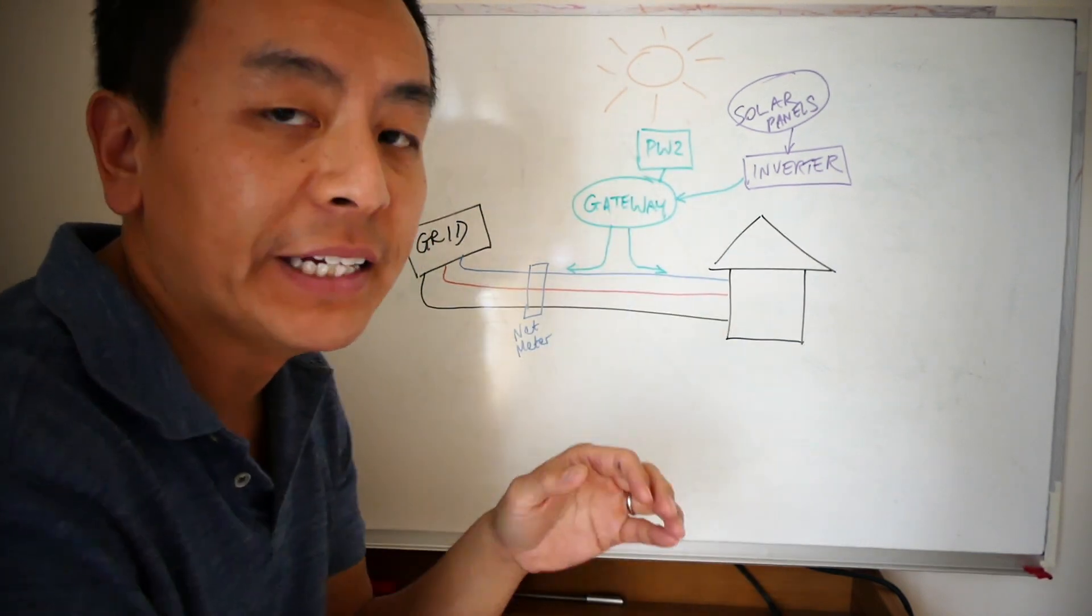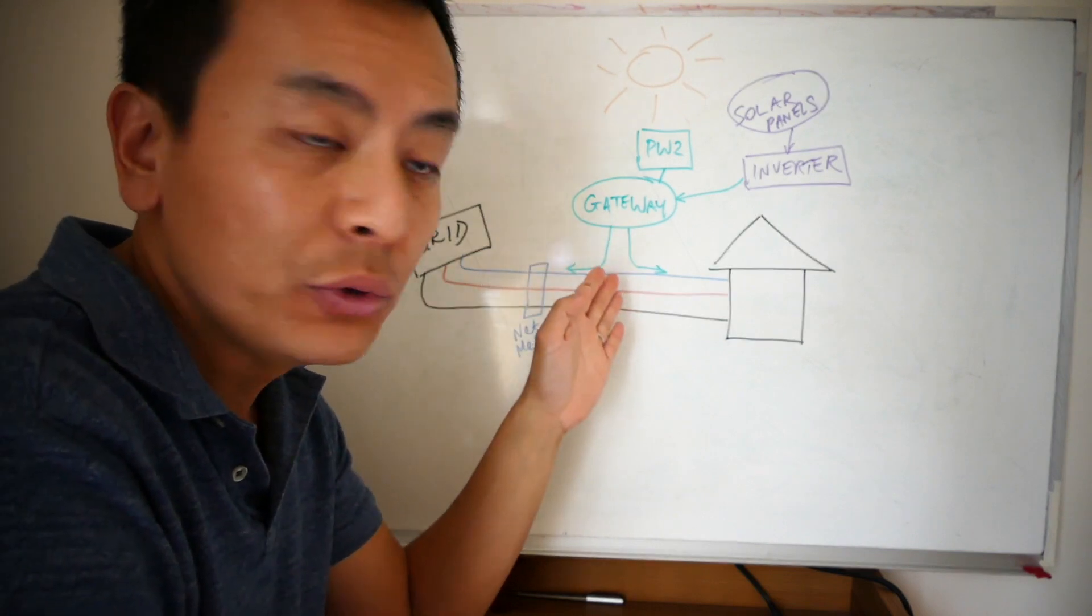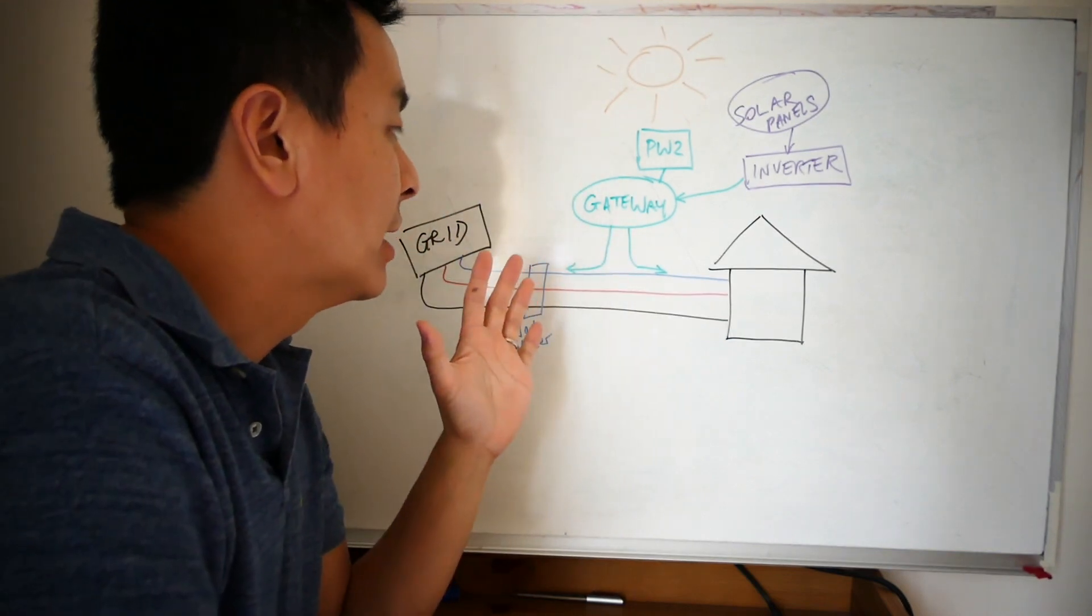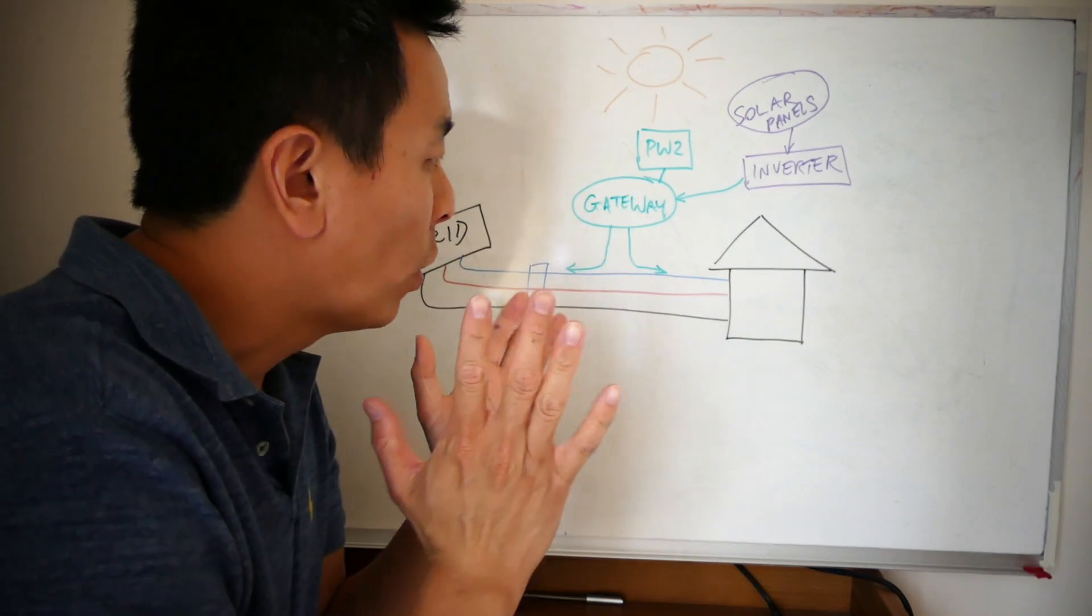I'm using either one or three-phase solar inverters, and I'm also going to touch on the new Gateway 2. I'm also going to talk about what would happen if you have three Powerwall 2s and what is the possibility of backup in three-phase with a new gateway.